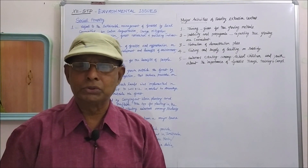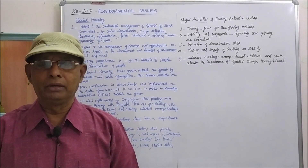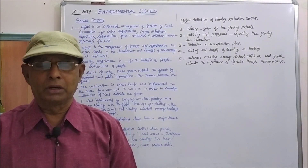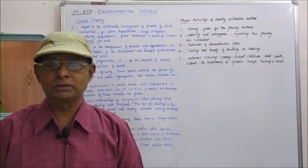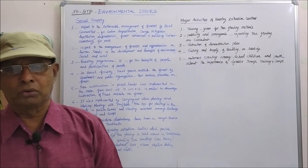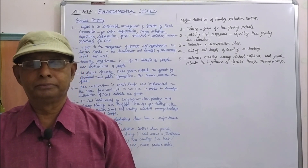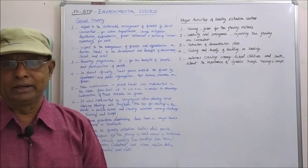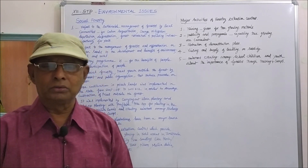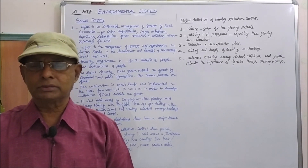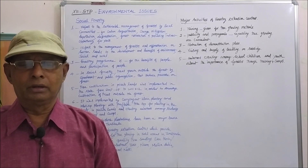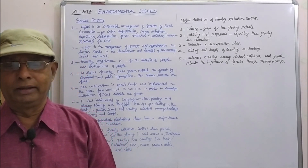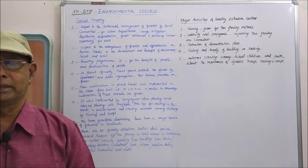TAN foreshore plantation has been a major source of firewood in Tamil Nadu. There are 32 forestry extension centers that provide technical support for tree growing in rural areas. These centers supply quality seedlings and saplings such as thornless bamboo, Casuarinas, teak, neem, Mallia, Dubia, grafted tamarind, and nelly tree.